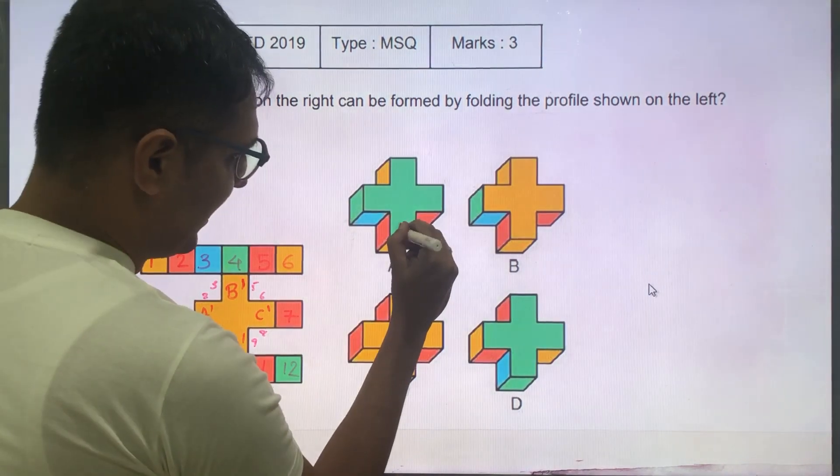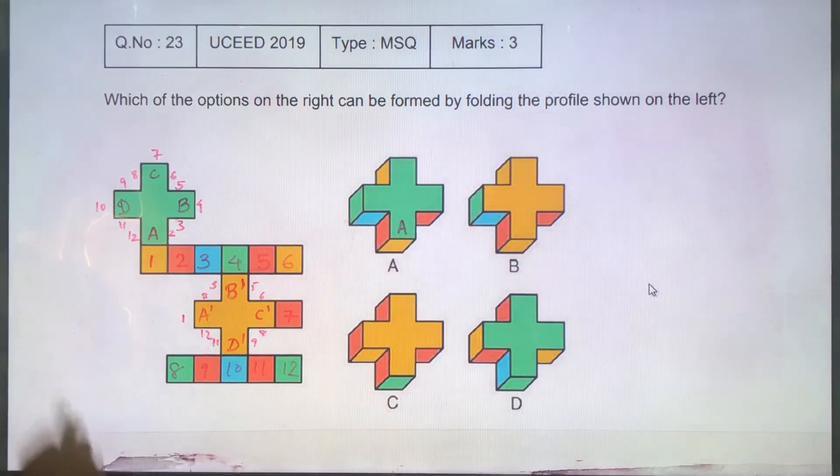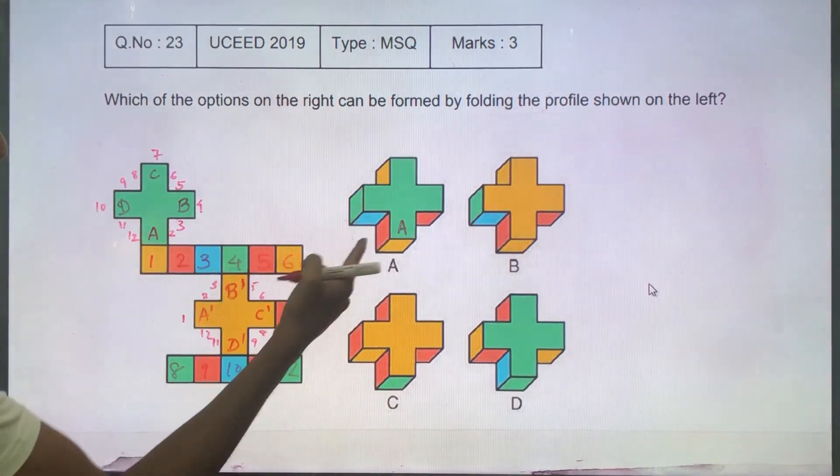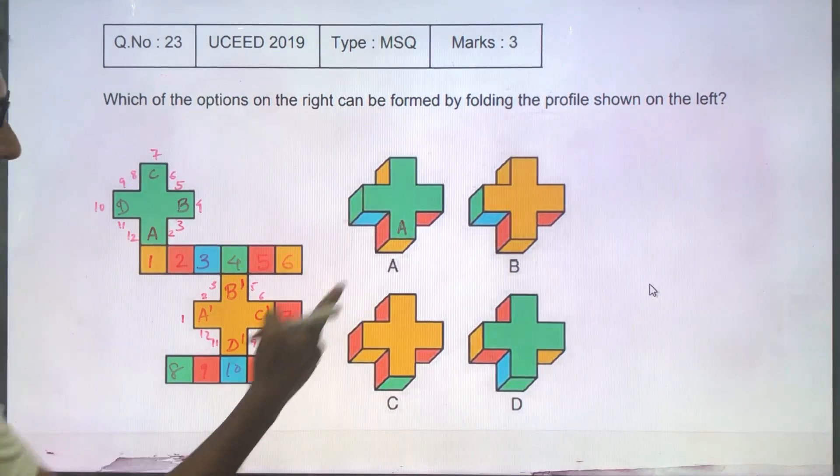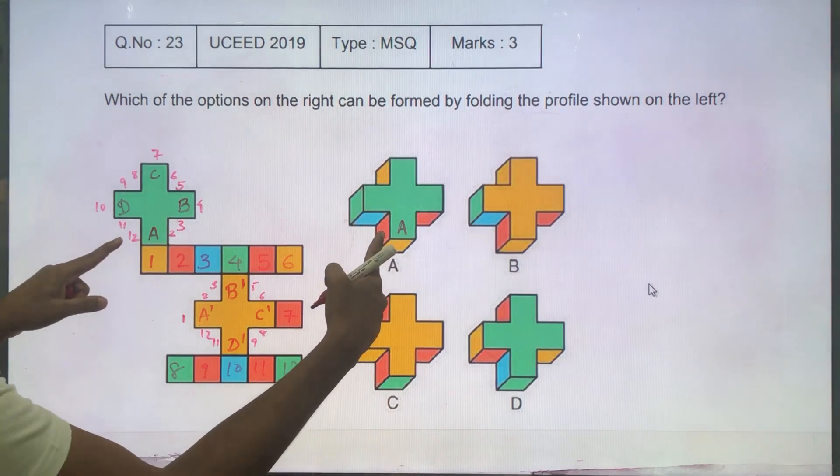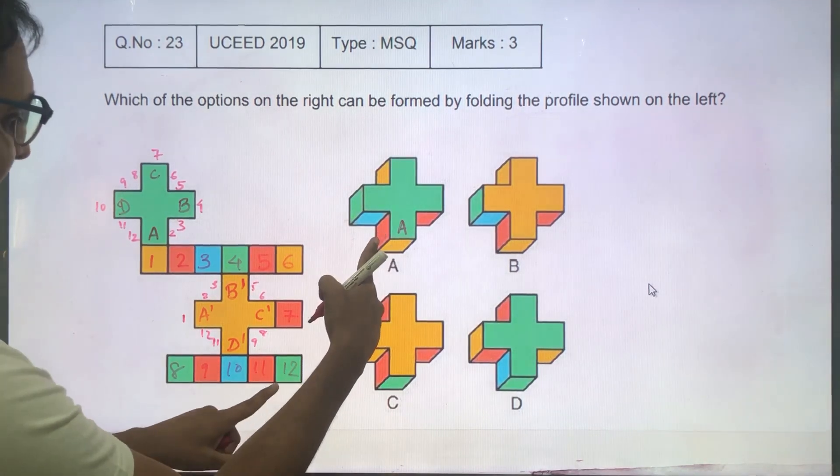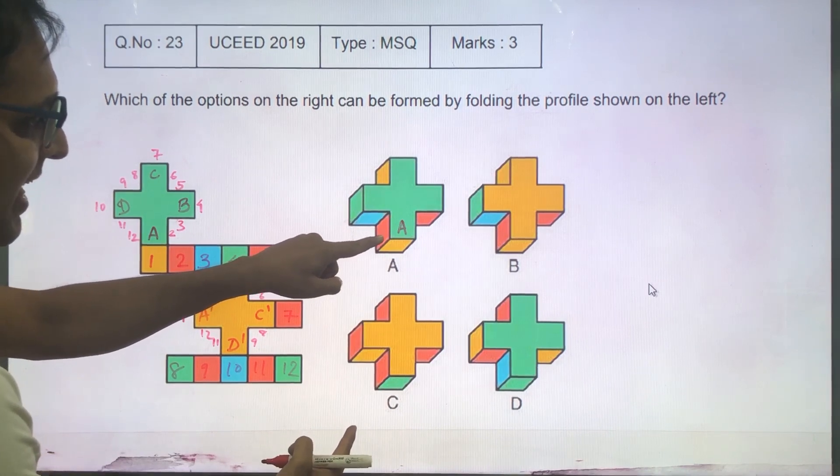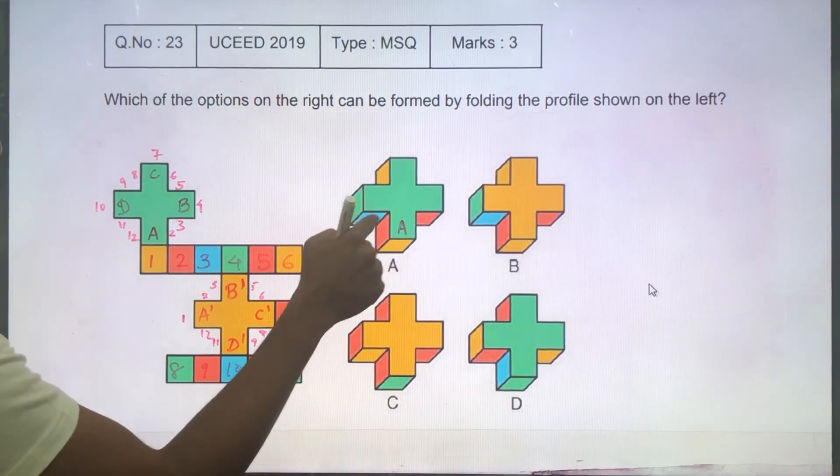so this particular section is A as per D. So now let's just check the other colors. It should match the numbers that we have written. So this should be 12 which is actually green, so that's not correct because here it is showing as red. Hence A will be eliminated.